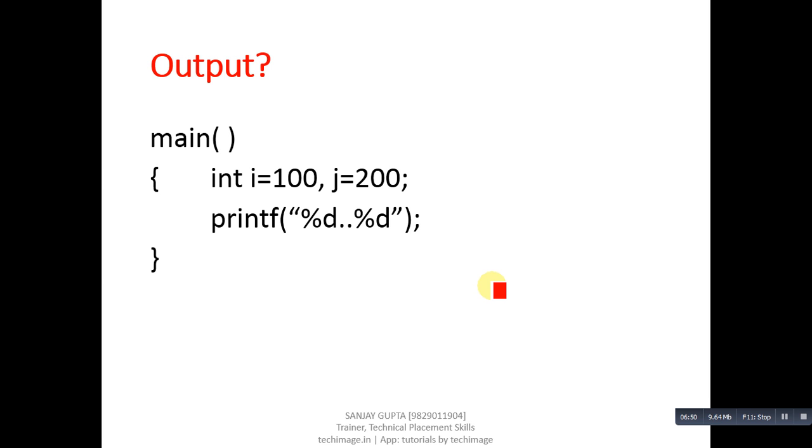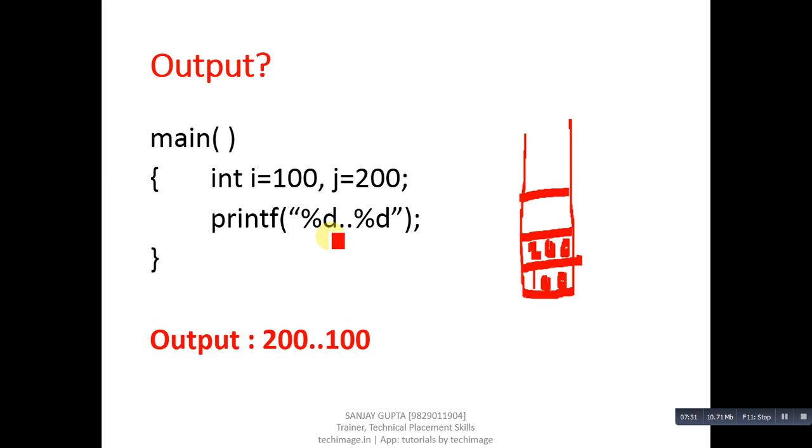This is another code segment. Here i is 100, j is 200. Then only percent d dot dot percent d is available. No variable is there, so it will print 200 and 100. When we declare a variable, its value is stored inside a stack. Stack is similar to an array which is known for last in, first out. When i variable is declared, 100 will be stored inside stack. Then j will store 200 into stack. This printf will print two integer values, so it will access the memory stack automatically. First 200 will be printed because it is top of stack, and then 100 will be printed, which is just after 200.